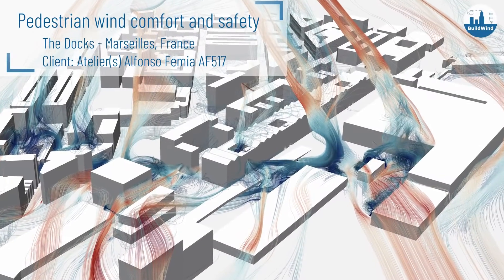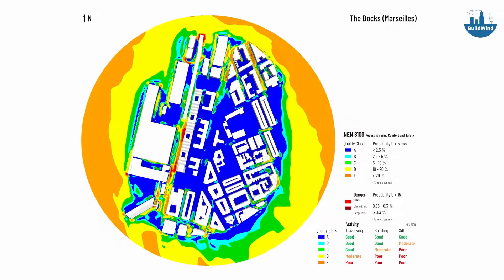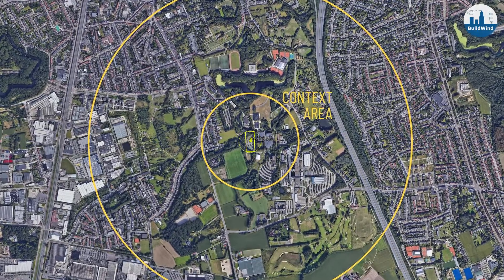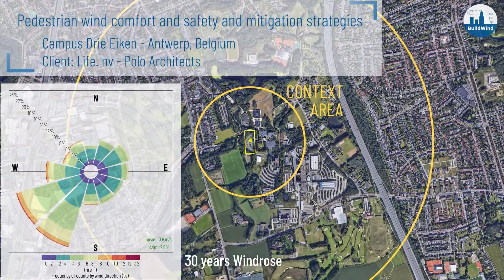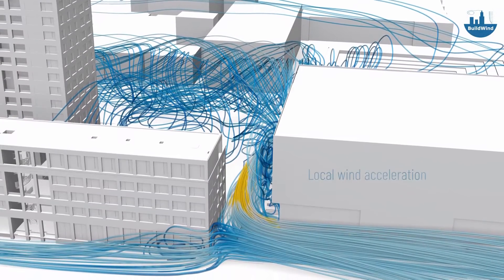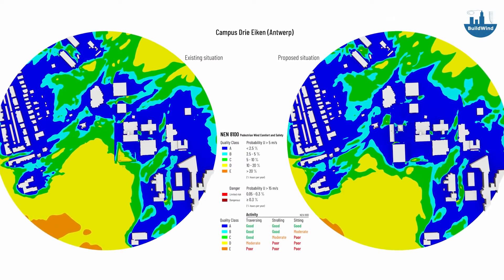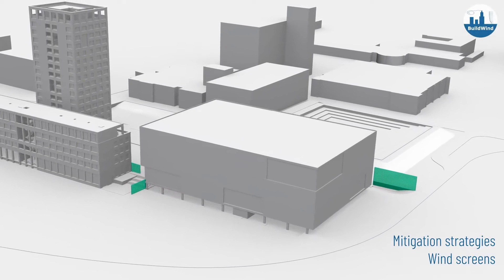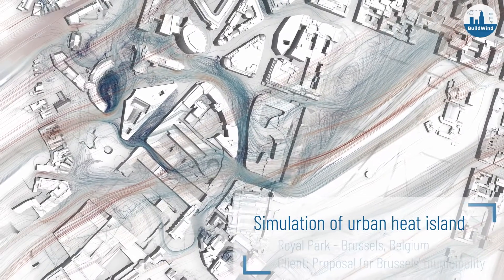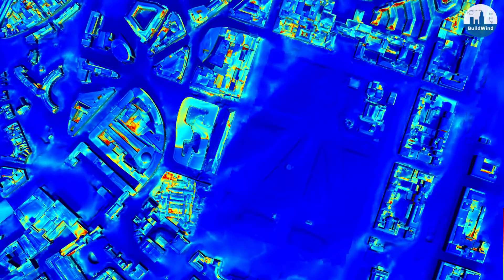Applications of computational fluid dynamics to architectural and urban design include wind load calculation, pedestrian wind comfort and safety assessment, site planning, assessment and improvement of indoor and outdoor environmental quality, design of heating, ventilation and air conditioning systems, and fire and smoke simulation.